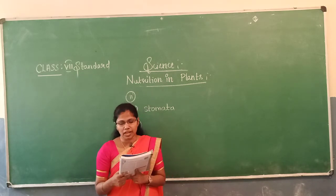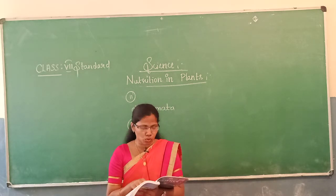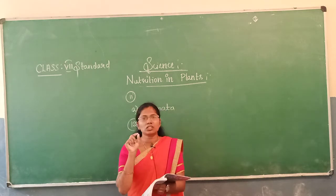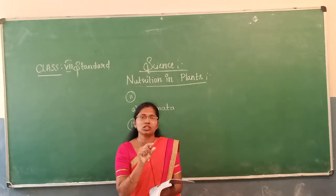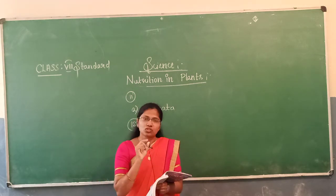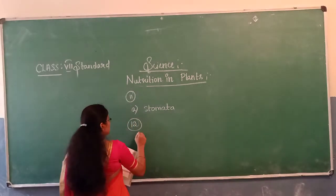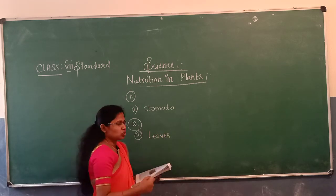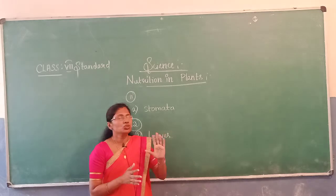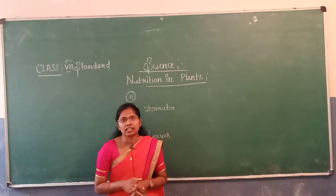Plants take in carbon dioxide from the atmosphere mainly through stomata, not through the roots which absorb minerals and nutrients. In the next class I am going to start the second chapter, that is nutrition in animals. Thank you.